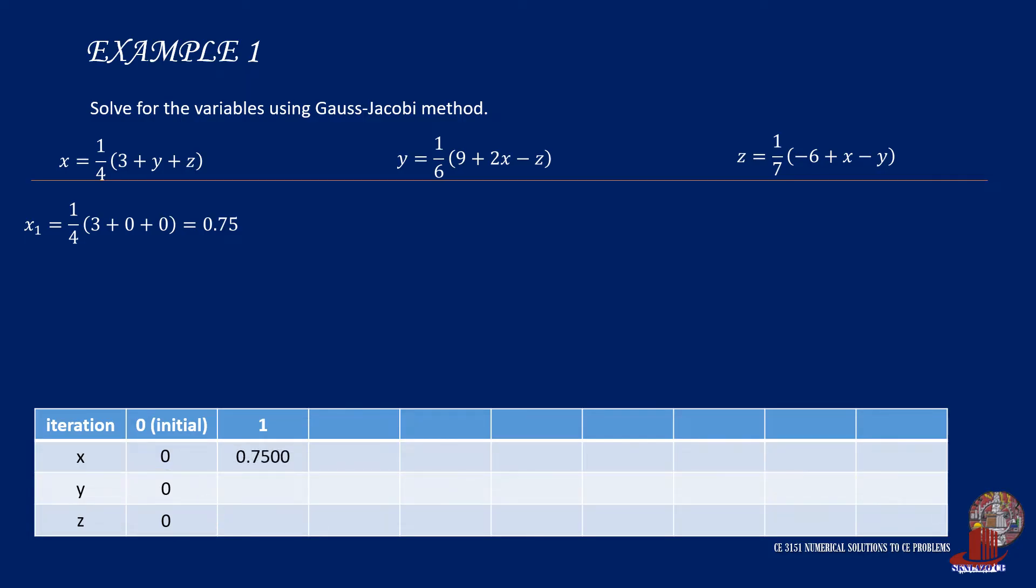Next is for y sub 1, which is one-sixth of 9 plus twice of x, which should be the latest updated value, and that is 0.75. Then minus z, which is zero, and this gives 1.75.